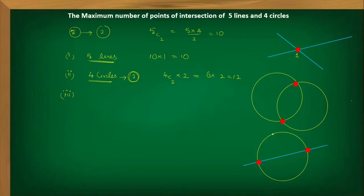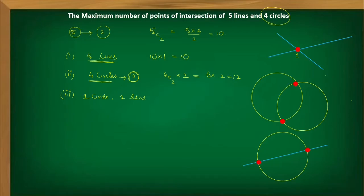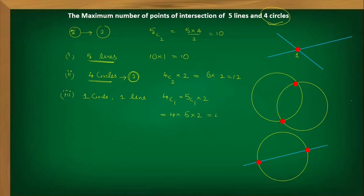How many such combinations are there? We want one circle selected from four circles and one line selected from five lines. One circle can be selected in 4C1 = 4 ways, and one line in 5C1 = 5 ways. Each such pair gives two points of intersection, so the total is 4C1 × 5C1 × 2 = 4 × 5 × 2 = 40 points.